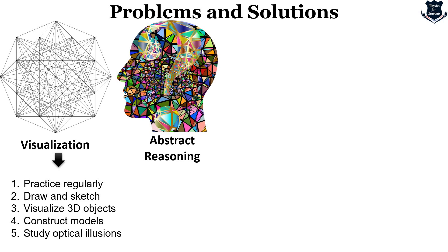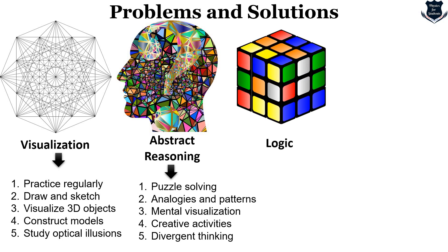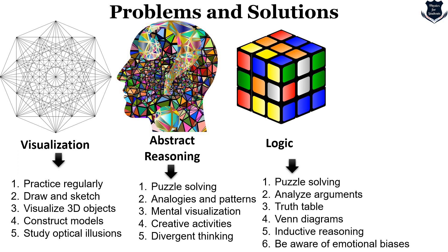The second hurdle is abstract reasoning. You need puzzle solving, analogies and patterns, mental visualization. Involve yourself more in creative thinking and divergent thinking — from here to another — so you get an abstract idea and abstract reasoning which doesn't have a direct logical sense. The third challenge is logic. Geometry deals with logic and puzzle solving. Analyze truth tables, Venn diagrams, and do inductive reasoning and mathematical proofs. Be aware of your emotional biases — we are all biased and need to come out of that to do proper critical thinking and enhance our logical power.